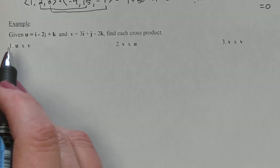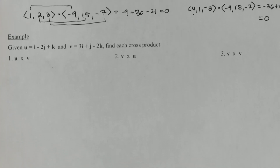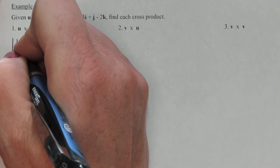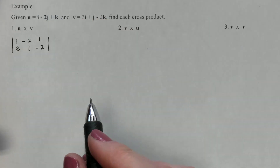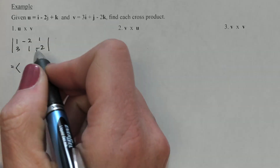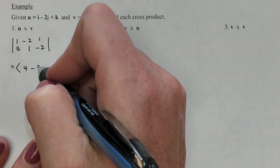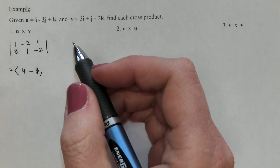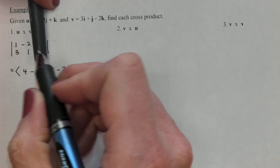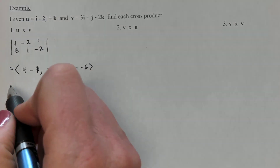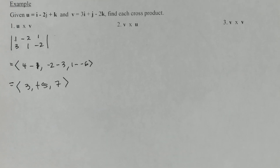We're going to do a few more cross products. First I'll show what happens if you reverse the order of the vectors, and then we're going to cross a vector with itself. First up is u = (1, -2, 1) crossed with v = (3, 1, -2). To find the first coordinate, cover up the first column: negative two times negative two is four, minus one times one is one. Cover up the middle column: one times negative two is negative two, minus one times three is three. Last column: one times one is one, minus negative two times three is negative six. Simplifying gives three, negative five, and seven. Remember to switch the sign on the middle term, so the cross product is (3, 5, 7).